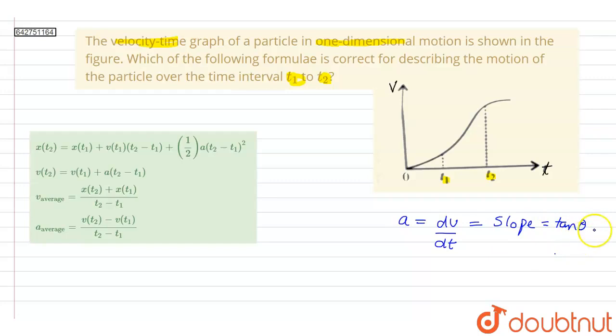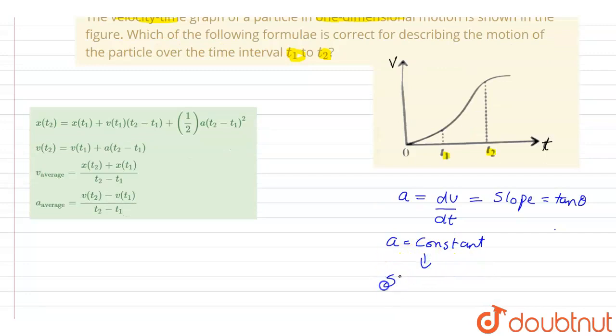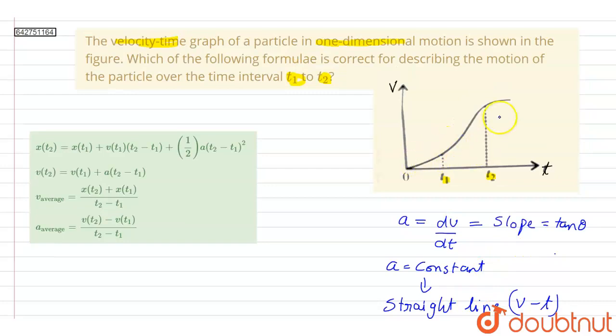We know that for a straight line, tan θ will be constant for the whole line. That means acceleration will be constant for a straight line v-t graph. But here the line is not straight. That means tan θ will vary at every other point of this graph because this is a curve. So this means that Newton's equations of motion cannot be used to describe motion between t1 and t2, because acceleration will not be constant. We know that the equations of motion are used only for cases of constant acceleration.